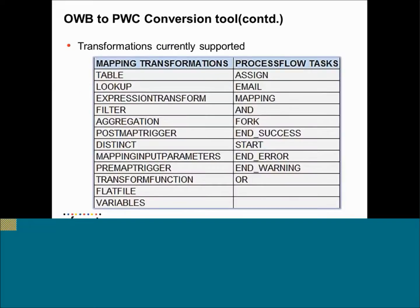Here is the list of transformations for the current version's support. From the mapping transformation side, we support tables, lookup, expression, filter, aggregation, etc. When it comes to process flows, we support assign, email, mapping — which is something similar to a session in PowerCenter — and fork, etc. These are all the process flow tasks we support.